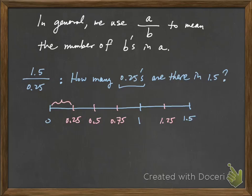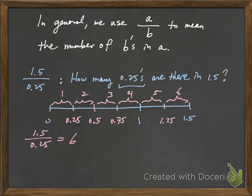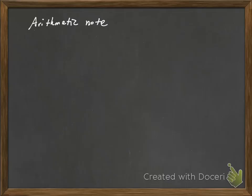And to answer the question how many 0.25's there are in 1.5, you simply count. So this is 1, there's 2, 3, 4, 5, and there are 6. So the answer to the expression 1.5 divided by 0.25 is equal to 6, and the way we interpret this is that there are 6 0.25's in 1.5.